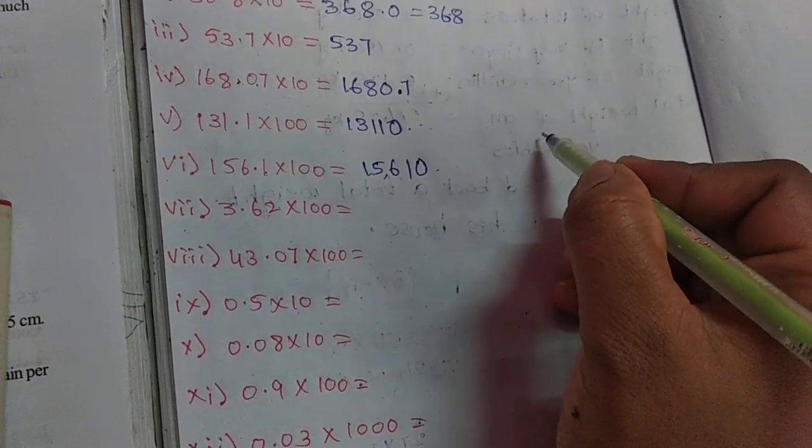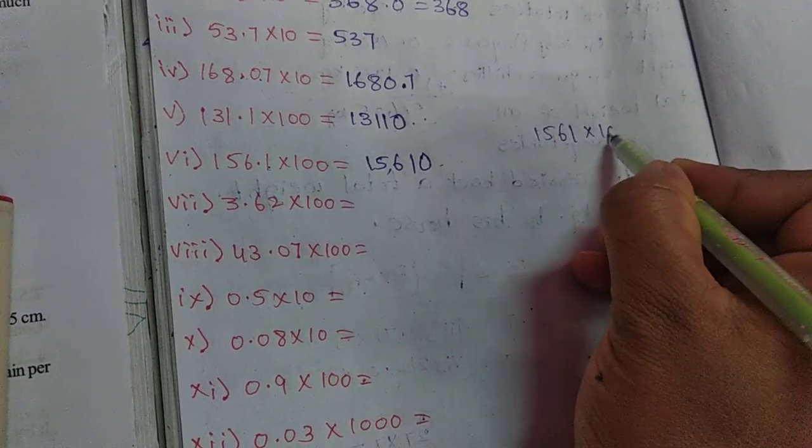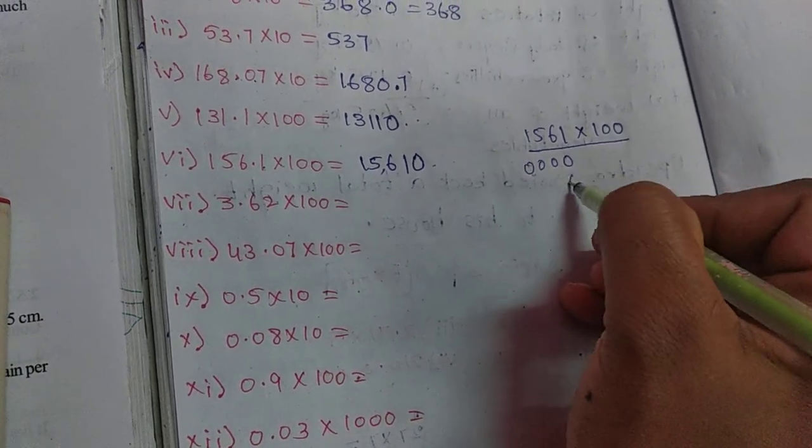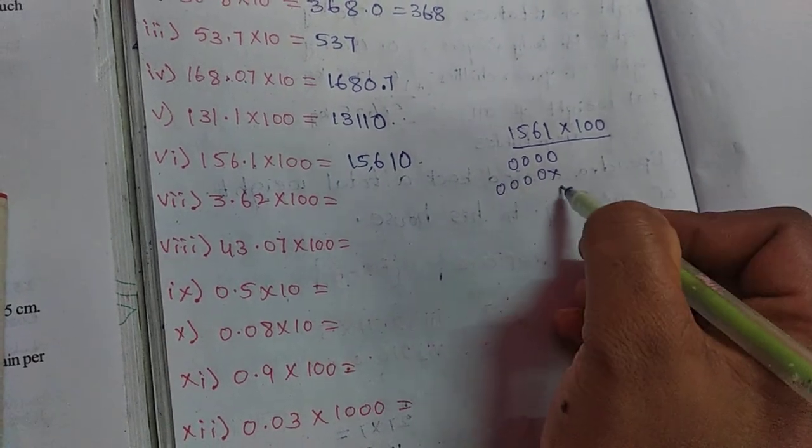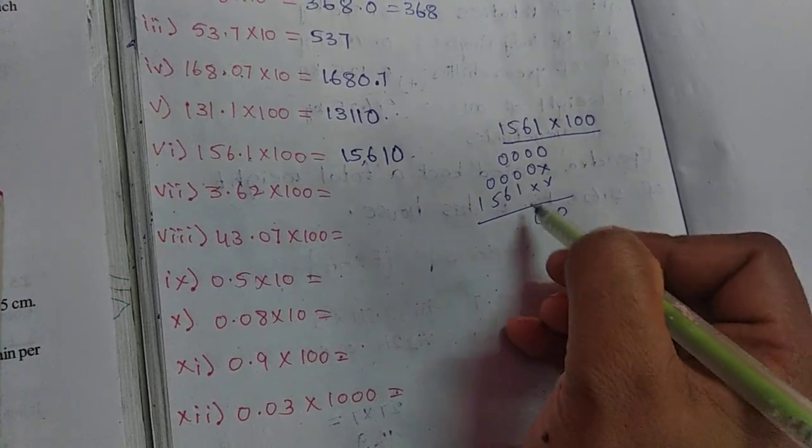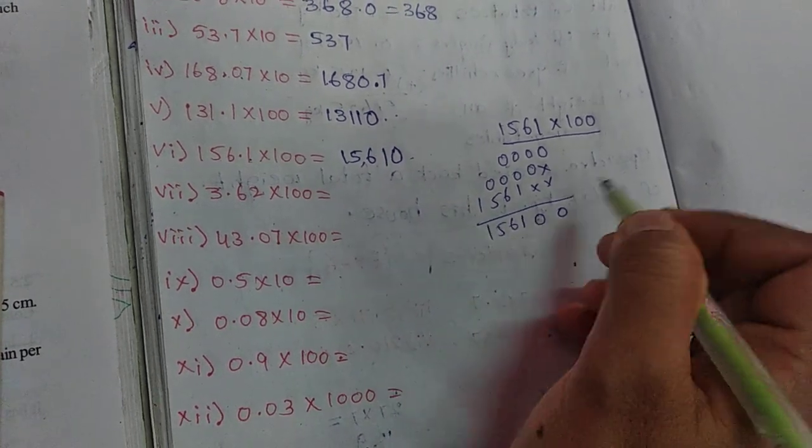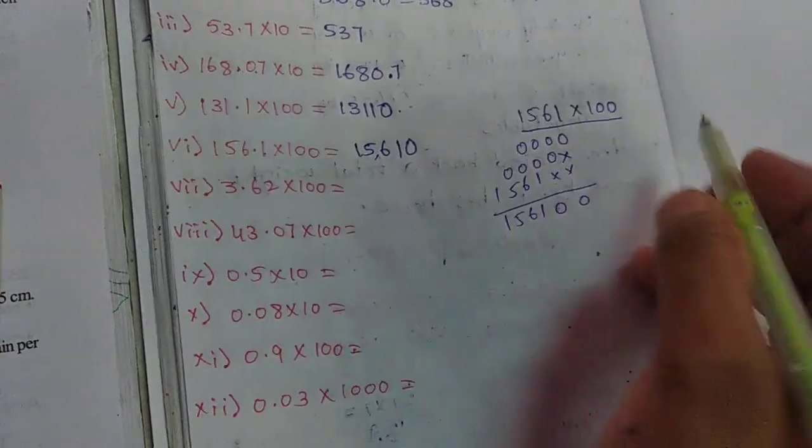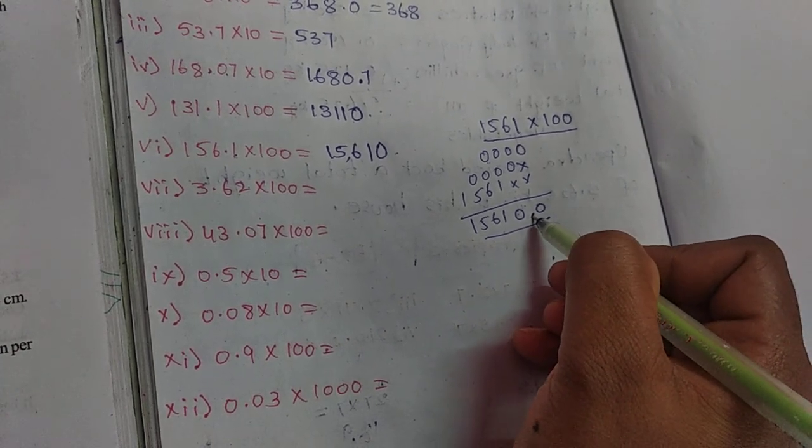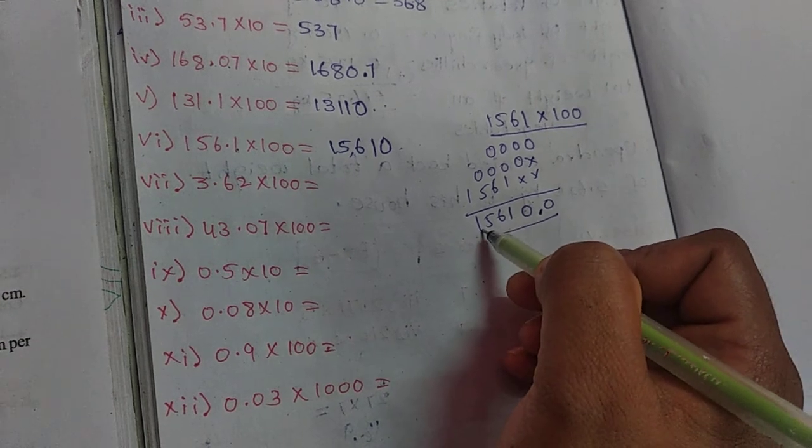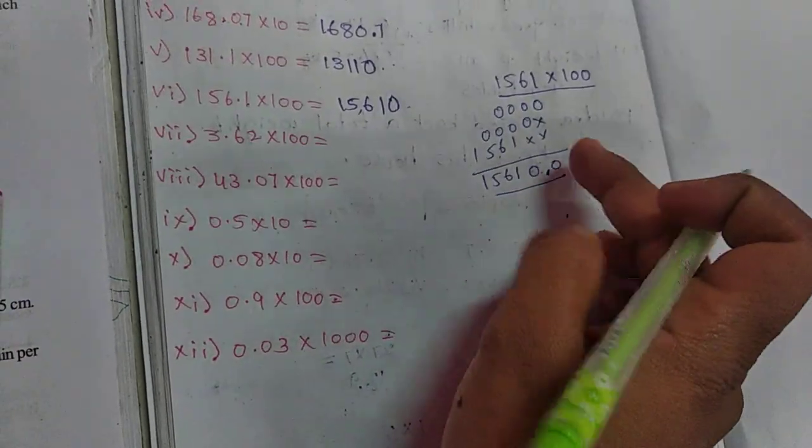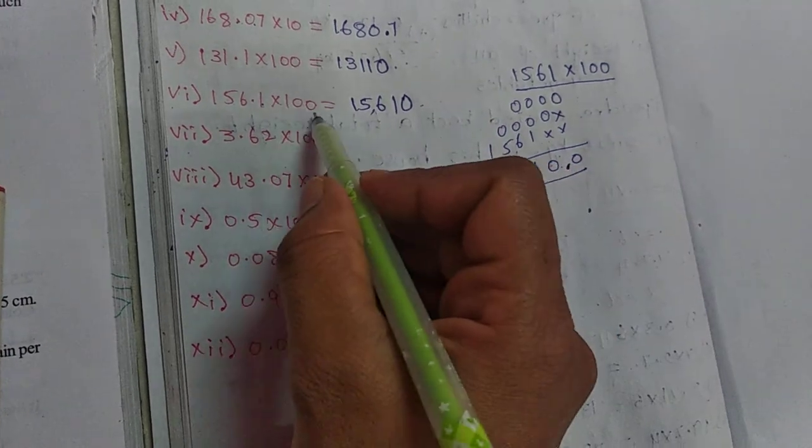If you do normal multiplication, it will be like this. First multiply by 0, all zeros. Next by 0, again all zeros. Next by 1: 1 times 1 is 1, 1 times 6 is 6, 1 times 5 is 5, 1 times 1 is 1. So 0 plus 0 plus 1 is 1, and here 6, 5, 1. Here the point is after 1 digit, so from right side one digit, then place the decimal point. The answer is 15,610. Trailing zeros can be removed. This is the actual multiplication method. The easy trick I showed makes it simple.